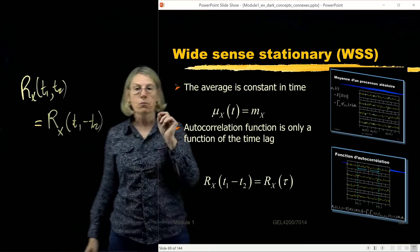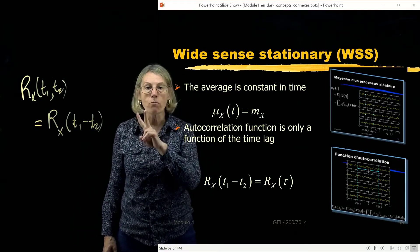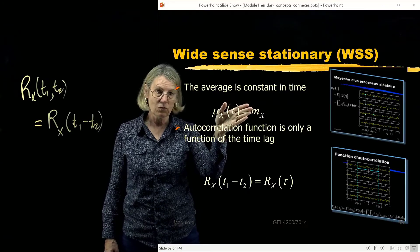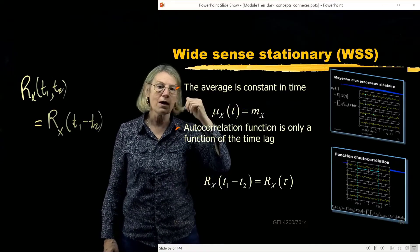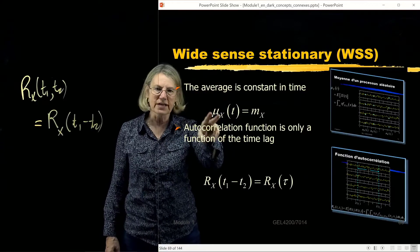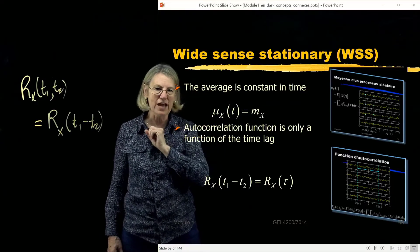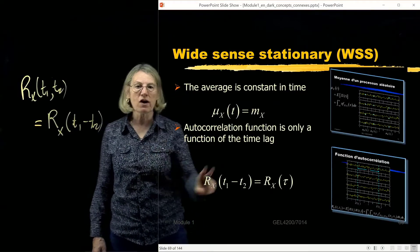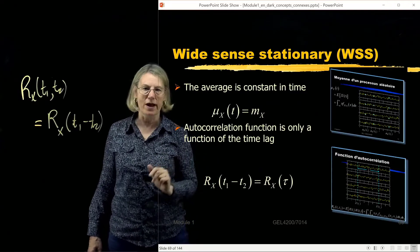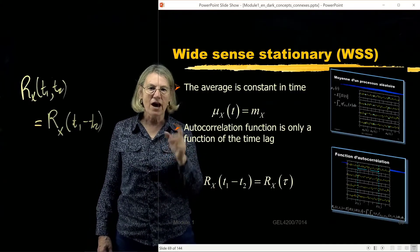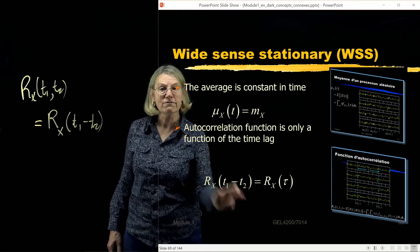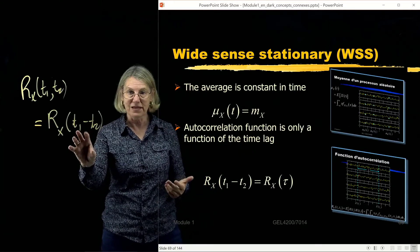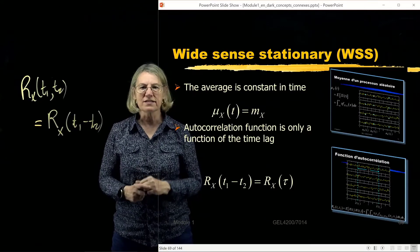So those processes for which these two moments, these two expectations - the first moment, the expected value, the mean value, the stochastic average, if that is constant, that's the first criteria. And the second moment, where I have the product of two random variables, if these two random variables are dependent such that their autocorrelation is only a function of their lag, so it's only how far apart it is and it doesn't matter what the absolute value of the time is, that's the second criteria for a wide-sense stationary process.